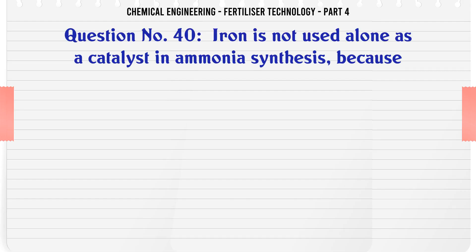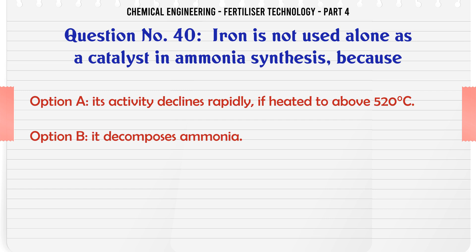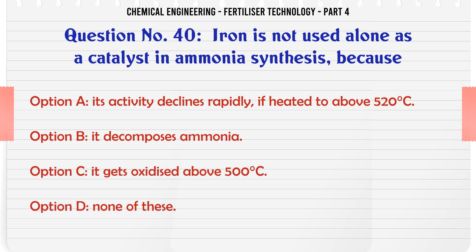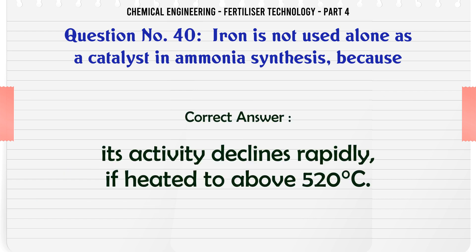Iron is not used alone as a catalyst in ammonia synthesis because: a. its activity declines rapidly if heated to above 520°C, b. it decomposes ammonia, c. it gets oxidized above 500°C, d. none of these. The correct answer is: its activity declines rapidly if heated to above 520°C.